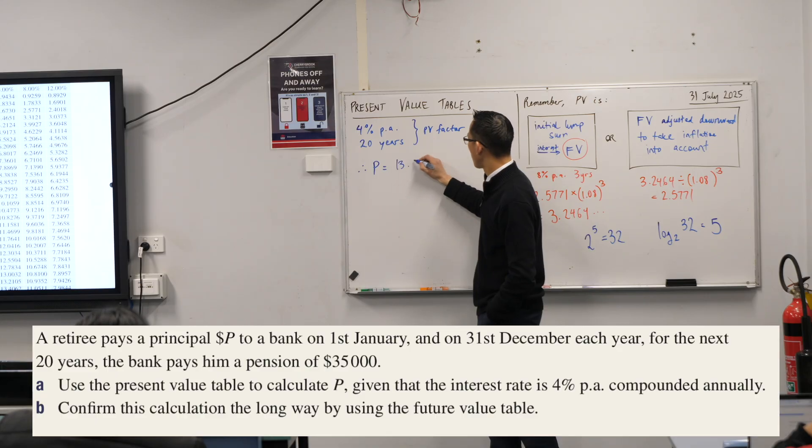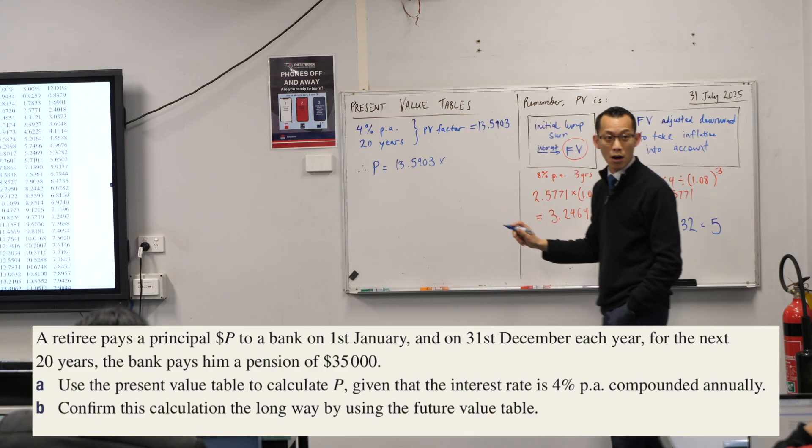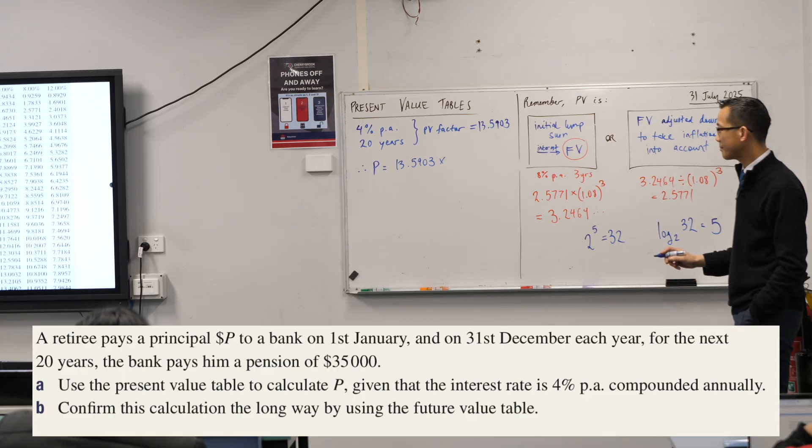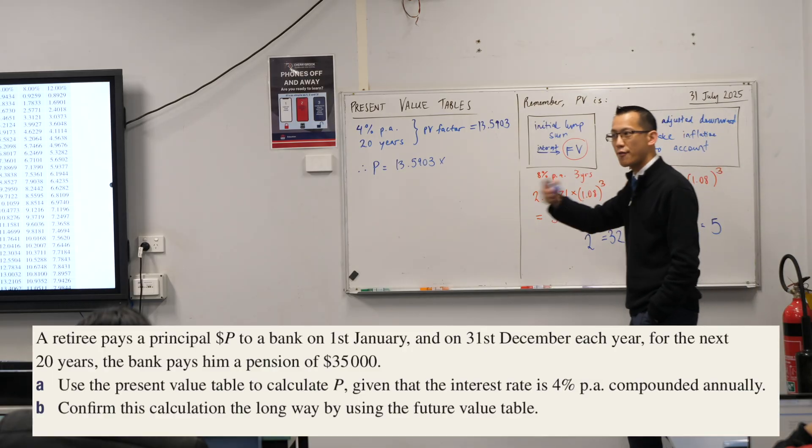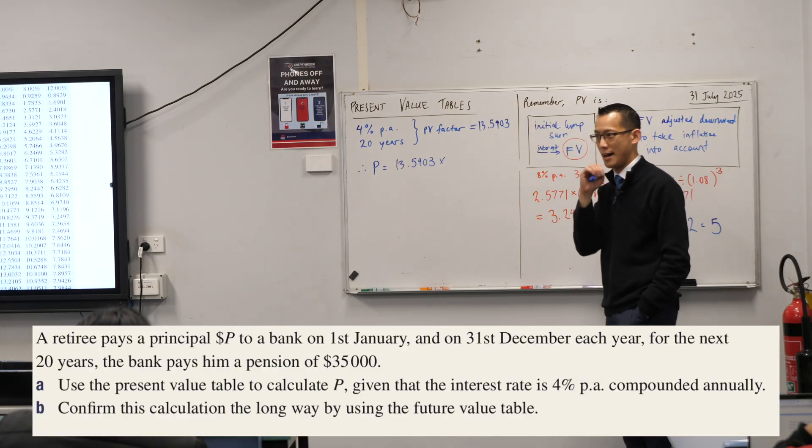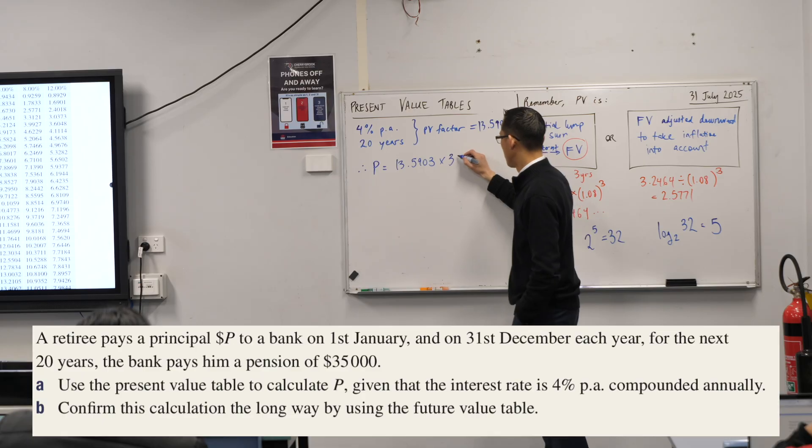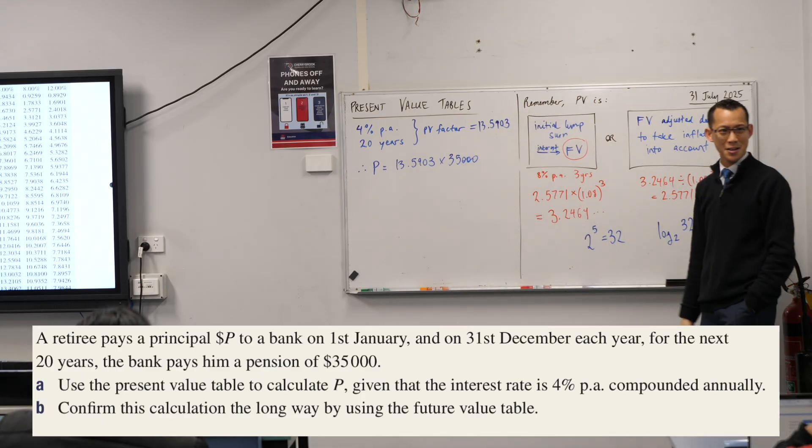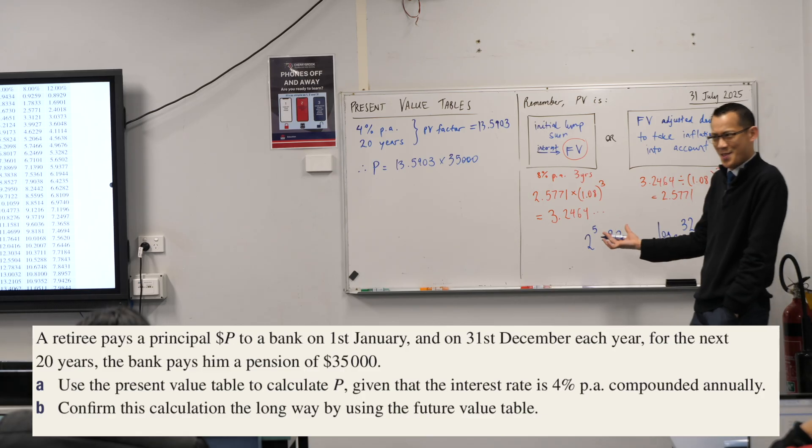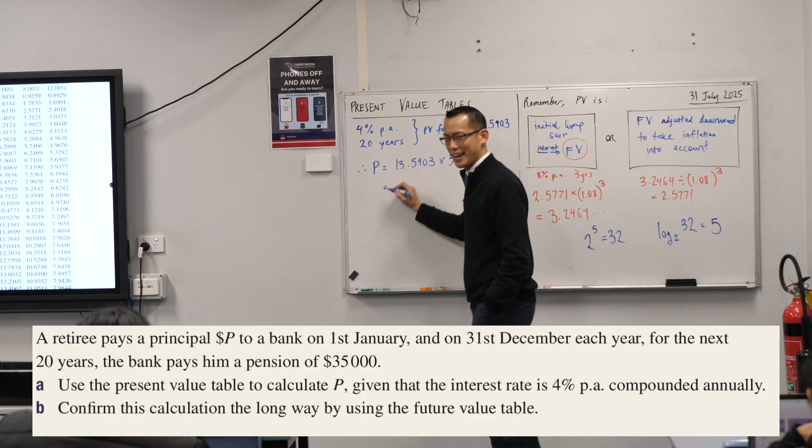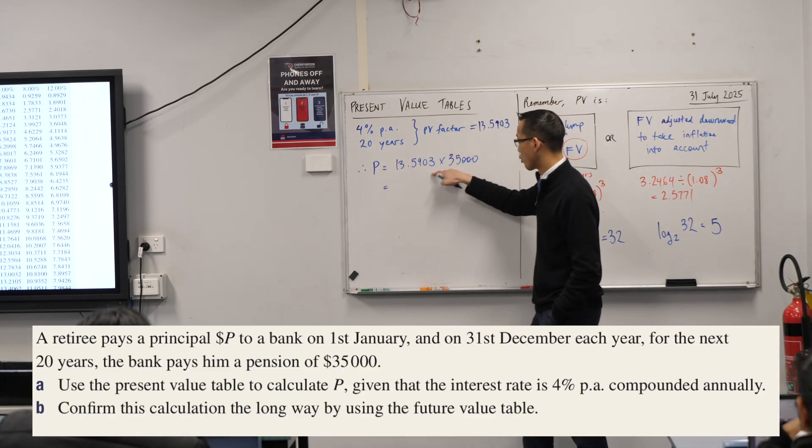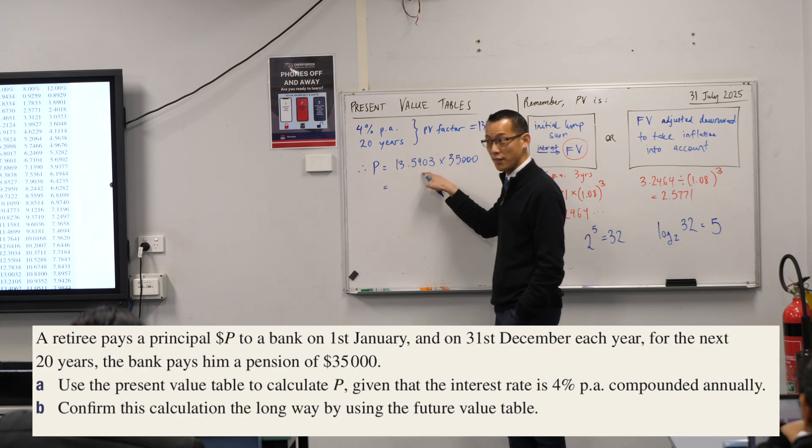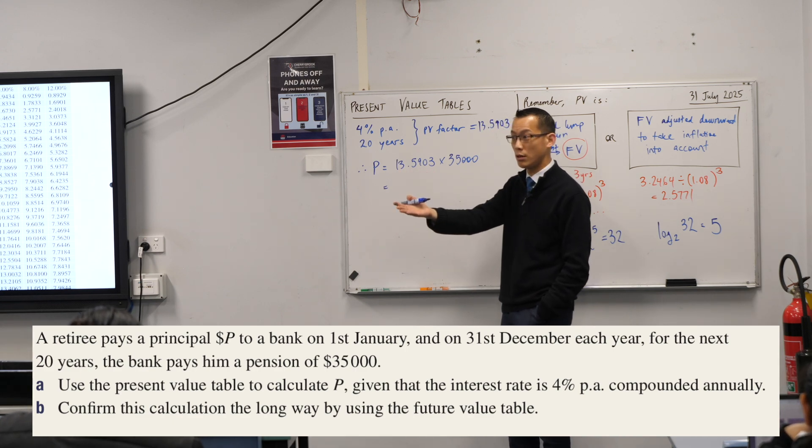Now, that 13.5903, that gets multiplied by, well, have a think, right? How much does he want every single year? Not a dollar paid out, he wants 35,000. I actually said he, I don't think the question specifies, could be she, no idea. So, calculation-wise, this is not very complicated. We get an answer out, we should only be getting or expecting six significant figures of accuracy, so if someone had gone and worked it out for me.